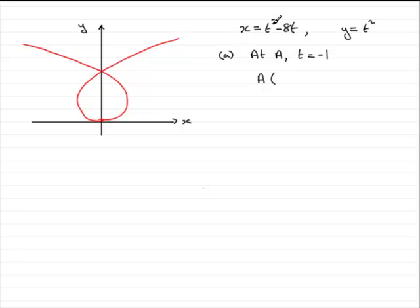Well, minus 1 cubed minus 8 times minus 1 comes to 7. And then you put minus 1 in here, minus 1 squared is 1. So, coordinates of A are 7, 1.